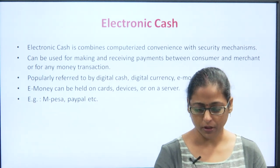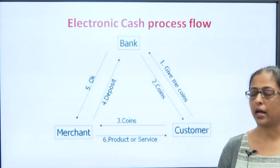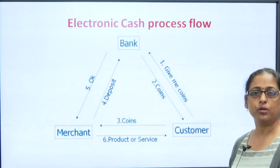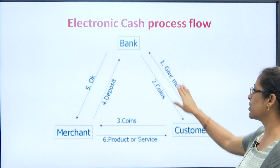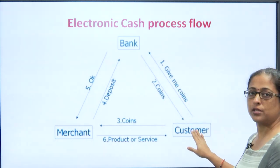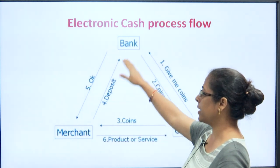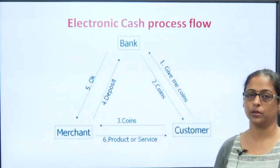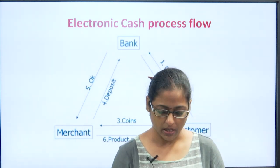Now proceeding further, let us also have a look at how transactions happen through electronic cash. There are three parties involved — the bank, merchant, and the customer. The customer requests for coins, which are transferred by the bank. Once the customer has received the coins, it is transferred to the merchant, which is deposited by the merchant to the bank and when verified, the product or services are transferred to the customer. This is how the e-payment system happens through eCash.